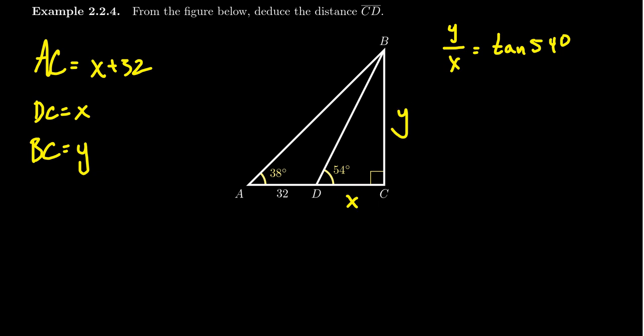Also, if we look at the larger triangle, the ABC triangle, if we also did a tangent ratio there, we're going to get Y over X plus 32 is equal to tangent of 38 degrees. You'll notice with both of these equations, if you were to clear the denominators,